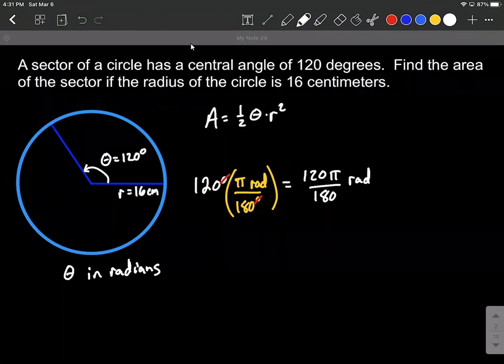So now that we've converted from degrees to radians, we can actually reduce this down a little bit that 120 and 180 are both multiples of 60. So a little bit easier working with 2 pi over 3 radians as opposed to 120 pi over 180.